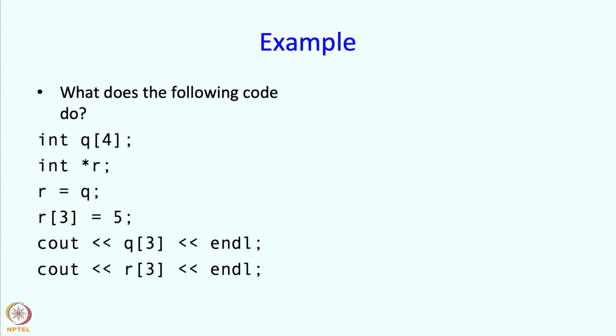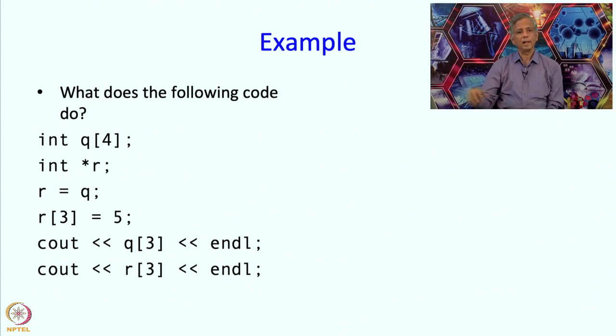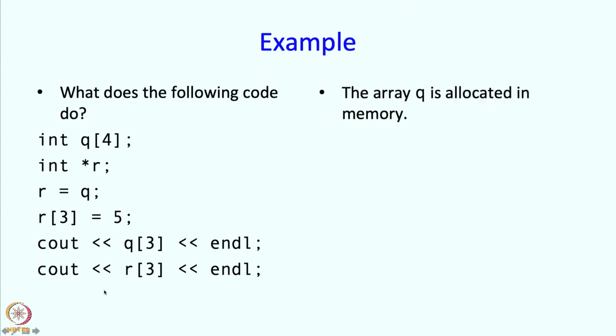So here is an example. We have this code and let us see what it does. When you come to the first statement of this code, this statement will cause an array q to be allocated in memory. What happens next? The variable r is created. Remember, the type of r is int star, so it is meant for storing addresses.